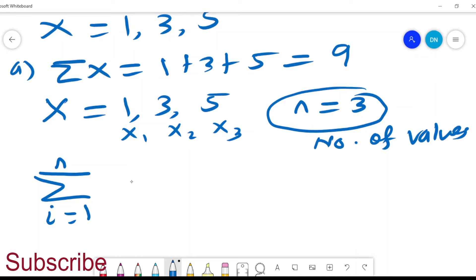Summation of xi will be x1 plus x2 plus x3, which is the same as 1 plus 3 plus 5, equals 9. So that is the summation sign and you can use it for various activities.